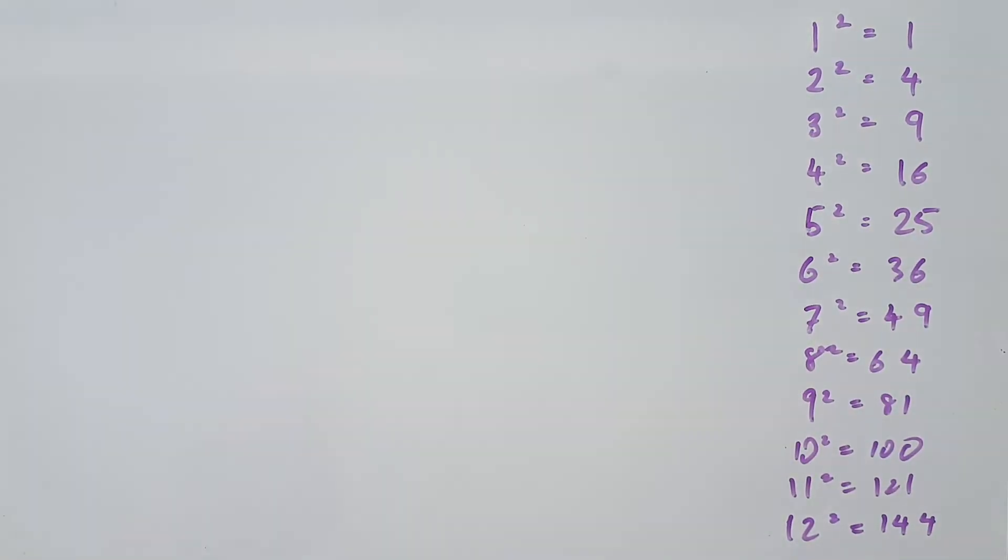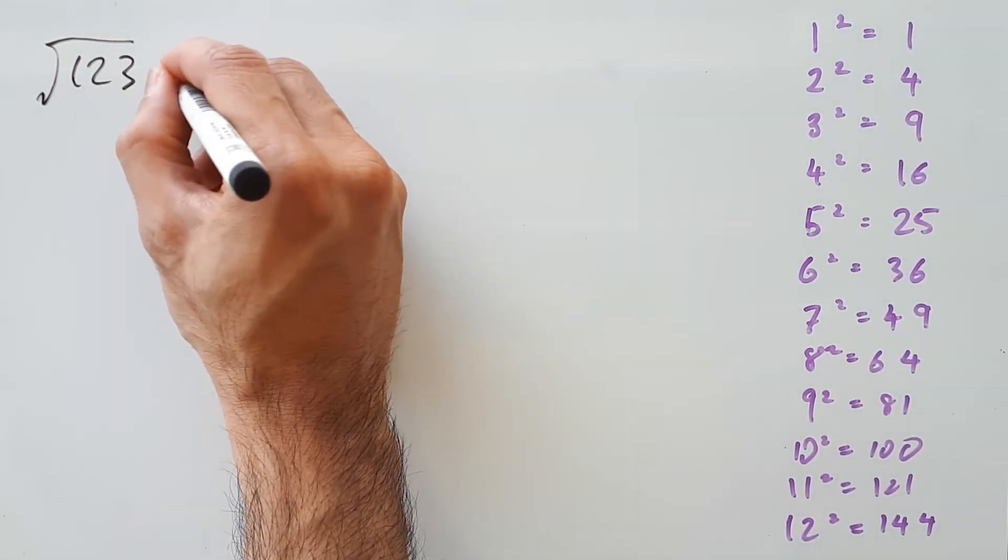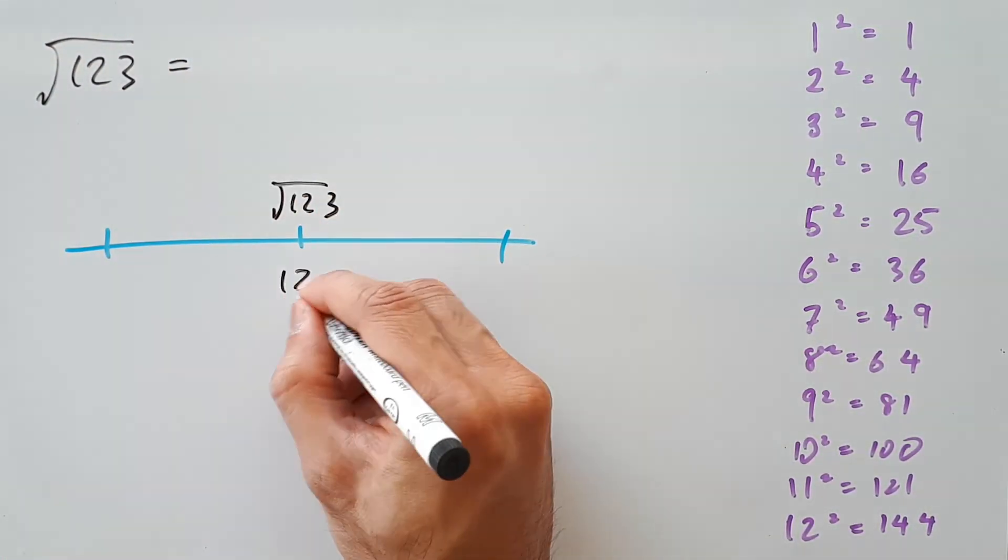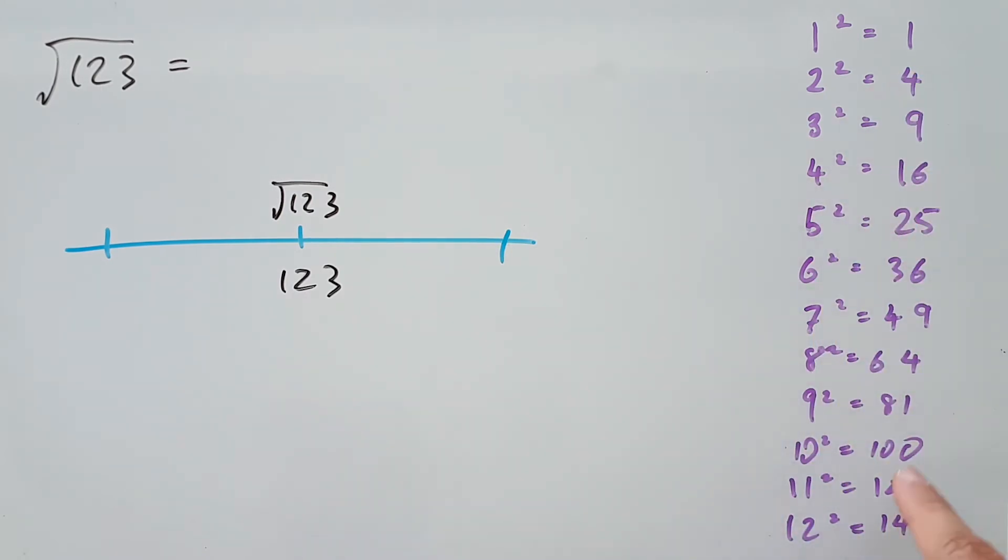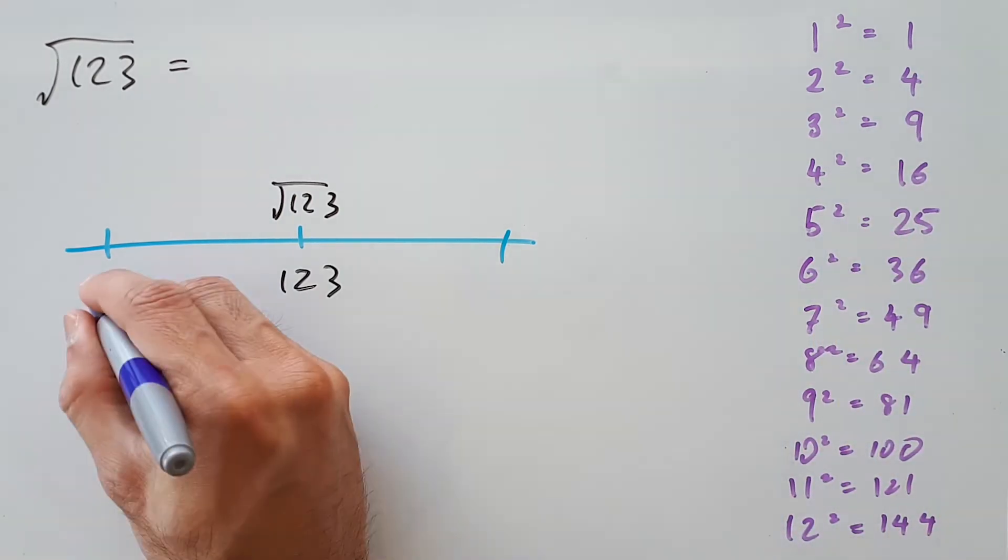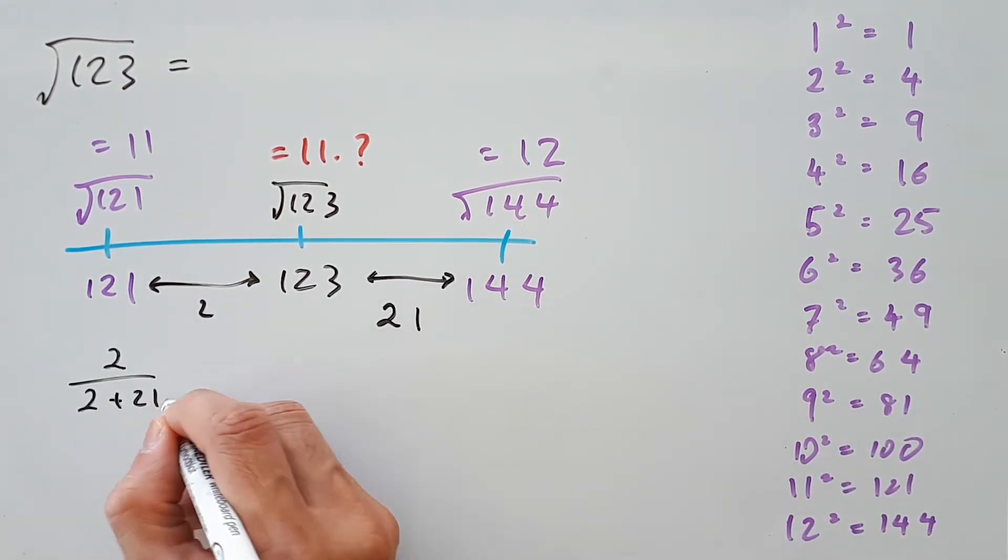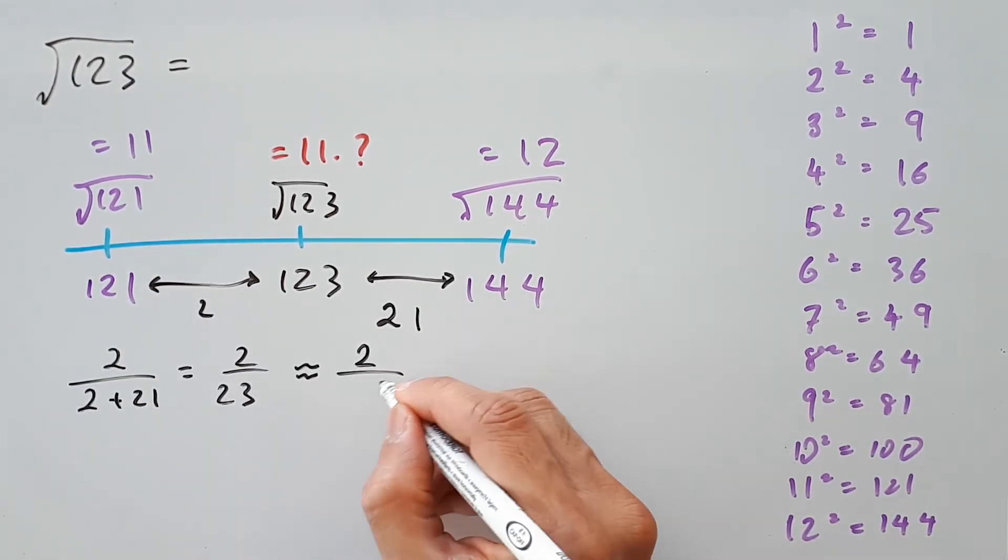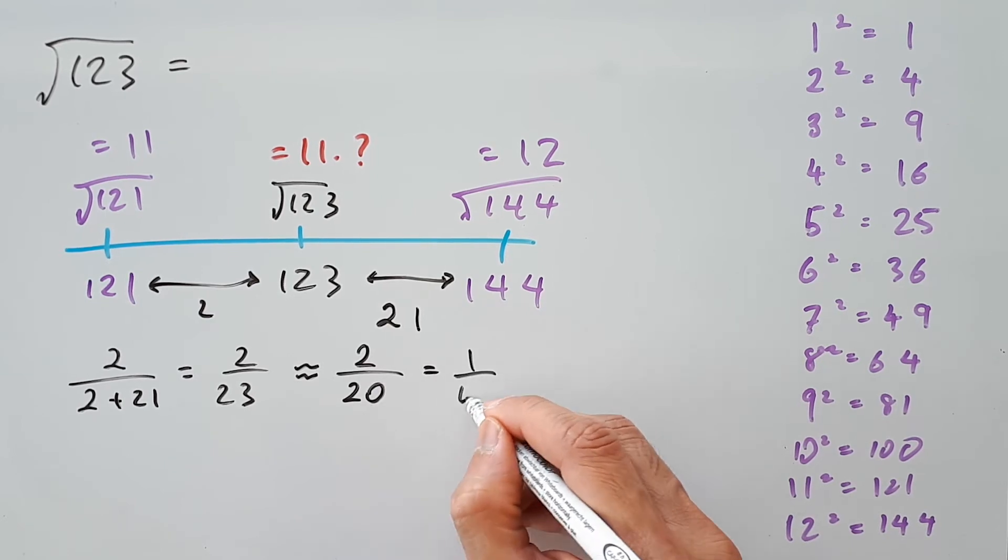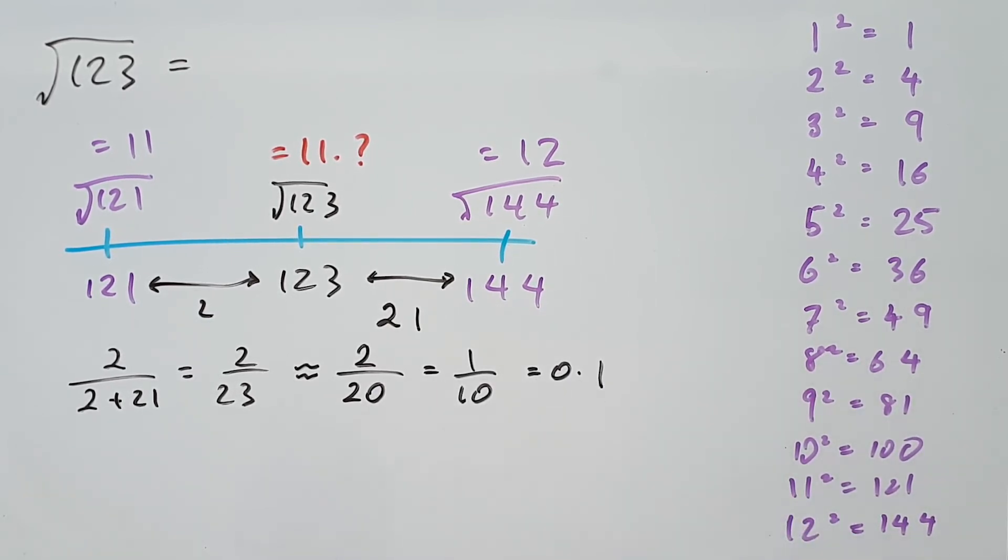So what about something larger, like square root of 123? Well, using the same method, 123 is between 121 and 144, which means the answer should be 11 point something. Finding our differences, we see that the fraction will be 2 on 23, which can estimate closely to 2 on 20, or 1 on 10, or 0.1, which means our answer is 11.1. The precise answer is 11.0905, which is only off by 0.01 units.